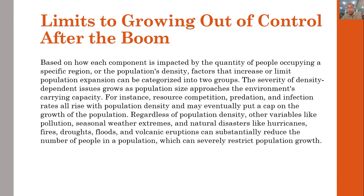Based on how each component is impacted by the quantity of individuals occupying a specific region, or population density, the factors that limit population expansion can be categorized into two groups. The severity of density-dependent issues grows as population size approaches the environment's carrying capacity — for instance, resource competition, predation, and infection rates all rise with population density. Regardless of population density, other variables like pollution, seasonal weather, and natural disasters such as hurricanes, fires, droughts, floods, and volcanic eruptions can substantially reduce population numbers and restrict population growth.